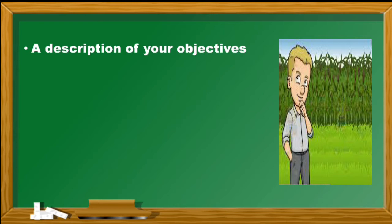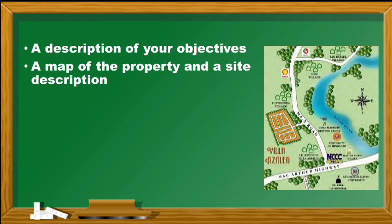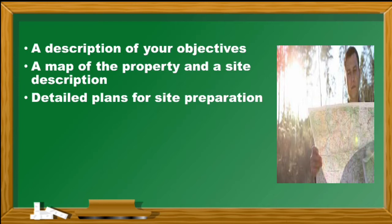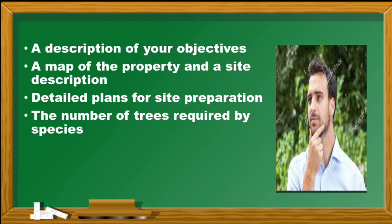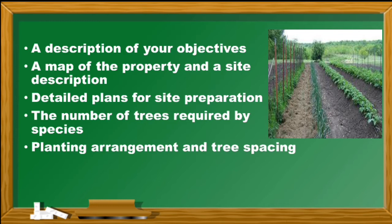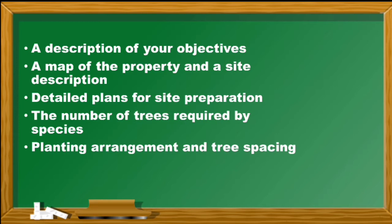A description of your objectives: you have to set goals and describe what kind of plants or seeds you want to plant. A map of property and site description: sketch your location to accurately know the estimated number of plants you will plant. Detailed plans for site preparation: learn the situation or condition of the location. The number of trees required by species: identify how many seeds or plants you will plant. Planting arrangement and tree spacing: know where you will plant and separate those plants from other trees or plants that will grow tall.